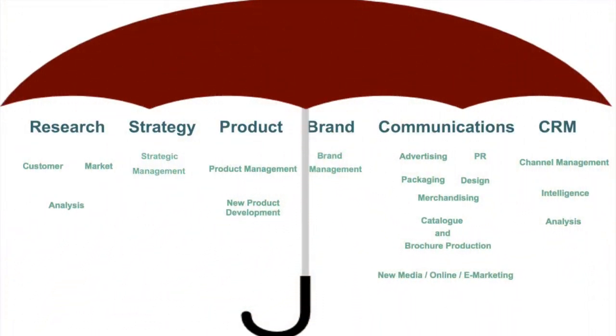I wasn't just going to leave you with the whiteboard, so at the end I've added this infographic. You can see we've added a few more elements. Strategic management under strategy, brand management under brand, they're both quite obvious. There's a few more items within communications. And also at the end there, with CRM, we've added channel management, intelligence, and analysis.